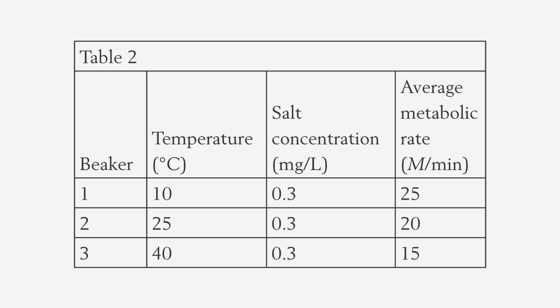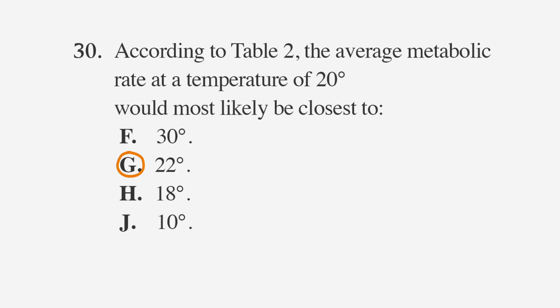Since we're looking for the metabolic rate when the temperature is 20 degrees, we should look between the values of 10 degrees and 25 degrees. The metabolic rate at 10 degrees is 25, and the rate at 25 degrees is 20, so the rate for 20 degrees should fall between these values. Therefore, our best choice is G. 22 degrees.